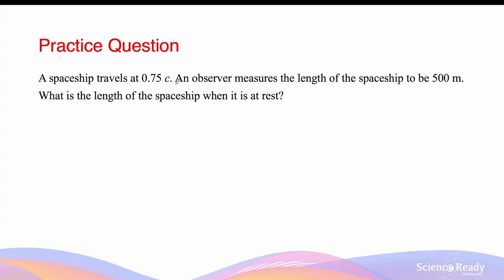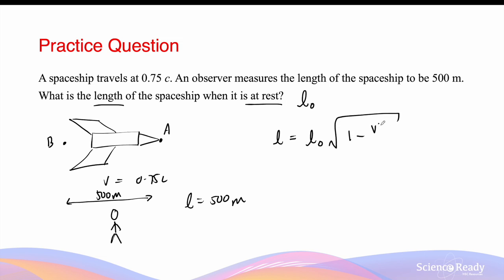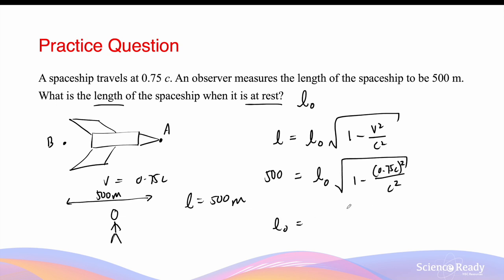Worked example: A spaceship travels at 0.75c. An observer measures the length of the spaceship to be 500 metres. Since the spaceship is moving relative to the observer, points A (front) and B (rear) are moving relative to the observer, so 500 metres is the contracted length L. We want to find the rest length L0. Rearranging: L0 = L / √(1 − v²/c²) = 500 / √(1 − 0.75²) ≈ 756 metres.